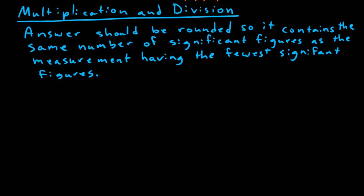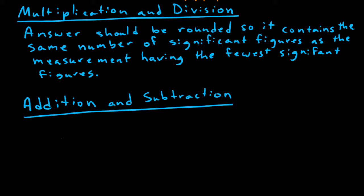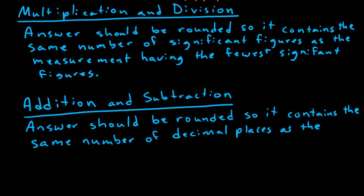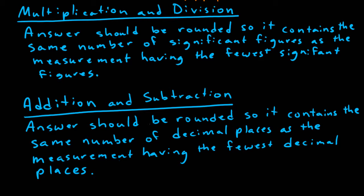There is a similar rule for rounding as it pertains to addition and subtraction. It says that our answer should be rounded so it contains the same number of decimal places as the measurement having the fewest decimal places. Notice that the key difference is that the rules for multiplication and division specify significant figures, and for addition and subtraction it specifies decimal places.